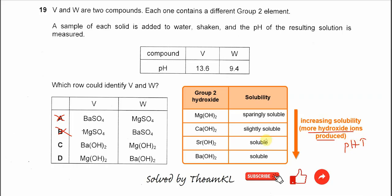So this means compound W is the magnesium hydroxide and compound V is the barium hydroxide. Because it's more soluble, it produces more hydroxide and the pH is higher.